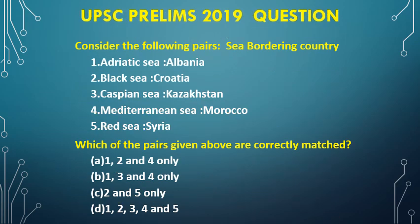Let us see the UPSC Prelims 2019 question. Consider the following pairs of seas and bordering countries. There are 5 pairs given with 5 different countries. As we studied the trick related to Caspian Sea, we will look at only option 3: Caspian Sea and Kazakhstan. As per our trick, Kazakhstan is touching the Caspian Sea, so option 3 is correct.